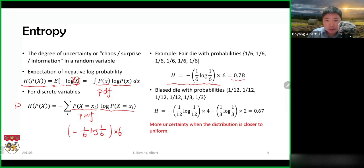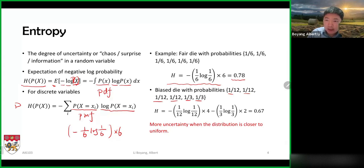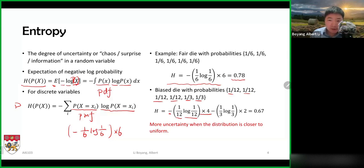We can also look at a biased die where the probabilities of the six sides are not equal. Four of the sides have the same probability of one over twelve, and the other two are more likely — this die is biased toward those two sides. To compute the entropy, we calculate one over twelve times the logarithm of one over twelve with a negative sign, multiplied by four for those four sides, and then add two terms of negative one-third times log one-third. If you punch in the numbers, you get 0.67.